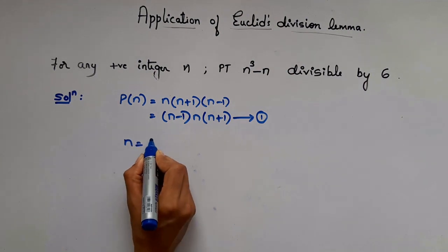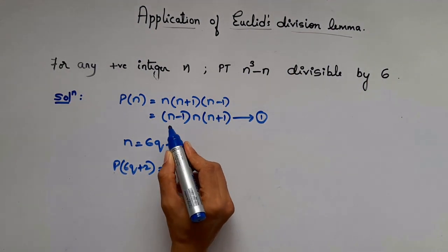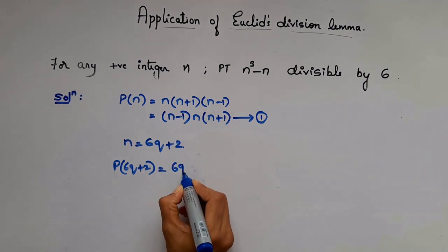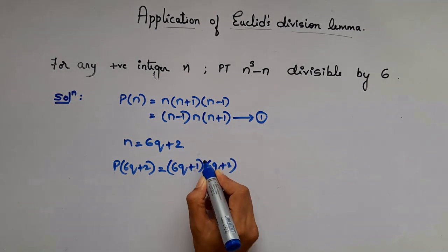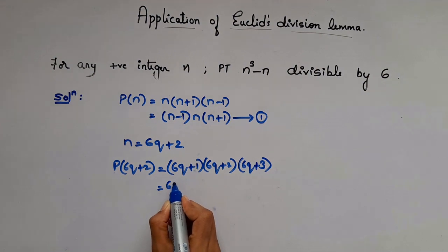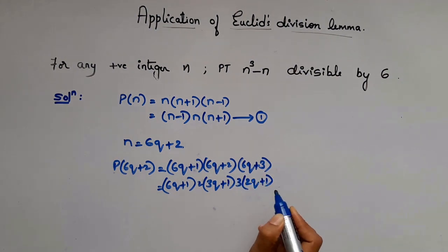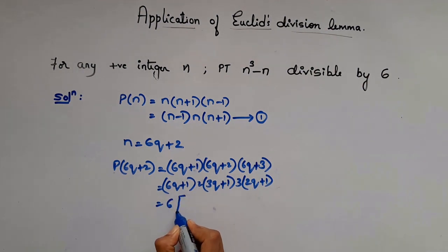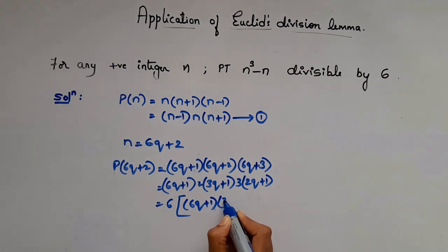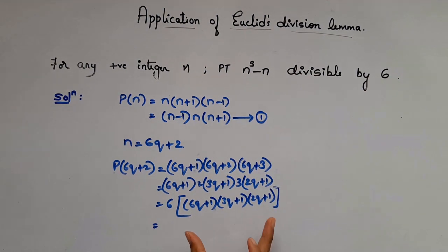Now when n = 6q + 2, replace n with 6q + 2. P(6q+2) = (6q+1)·(6q+2)·(6q+3). Here 2 is common in (6q+2) and 3 is common in (6q+3), giving factors of 2 and 3, which together make 6. Taking the whole remaining term as m, this is 6m — a multiple of 6, hence divisible by 6.